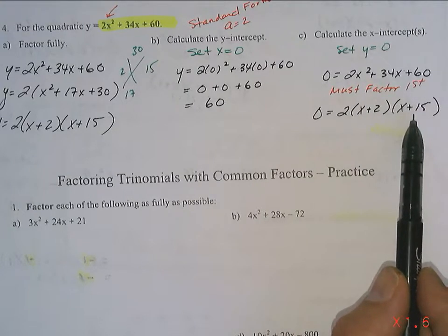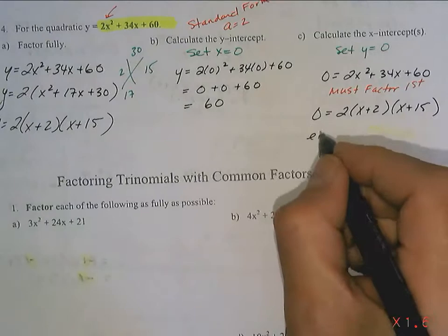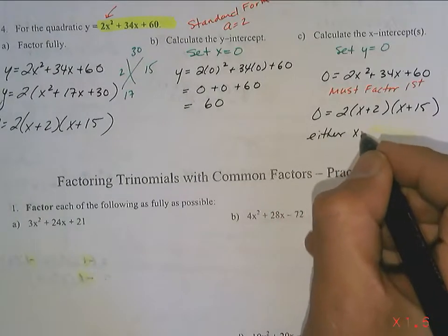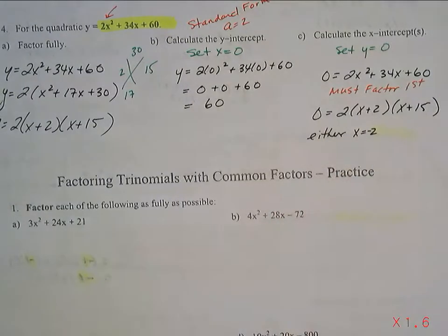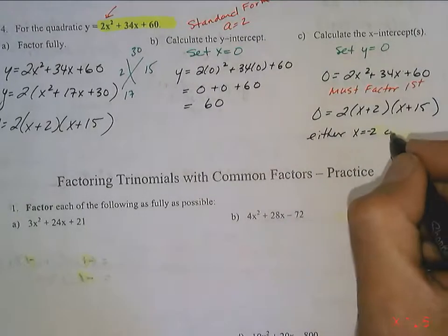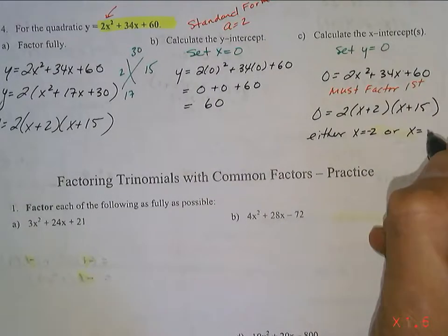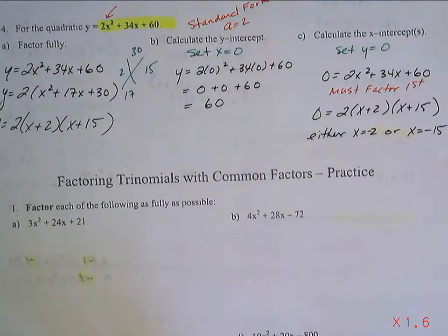either this term is 0 or this term is 0. Do you agree? Which means either x equals negative 2. I suppose I could, no, I could not. x equals negative 2 or x equals negative 15. Those are your two answers.